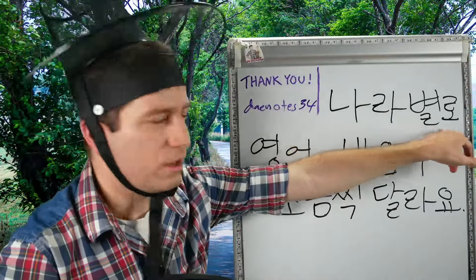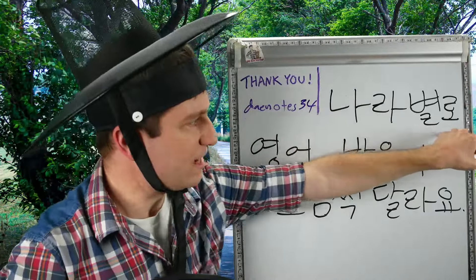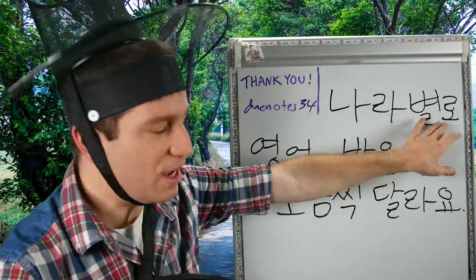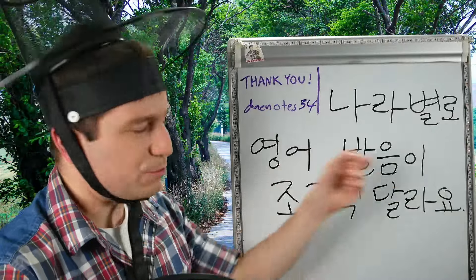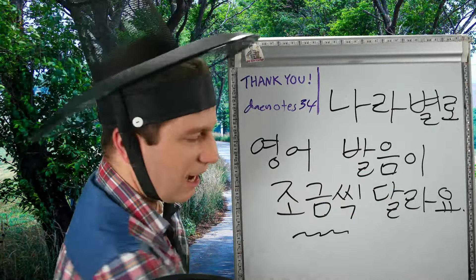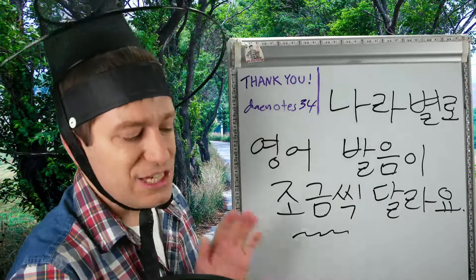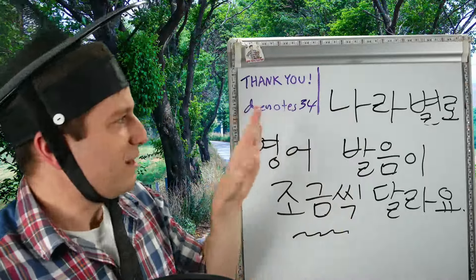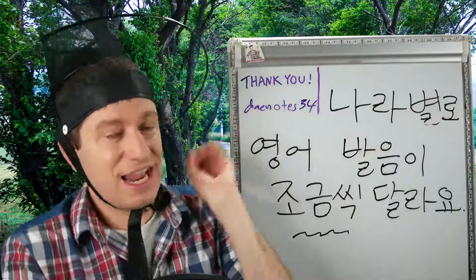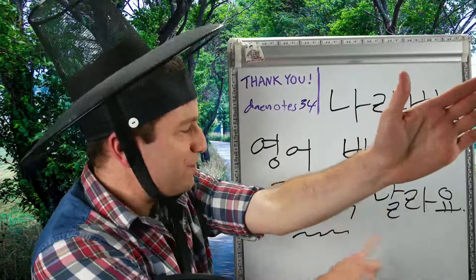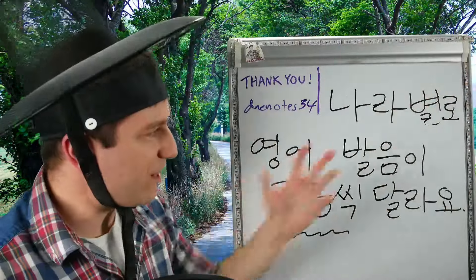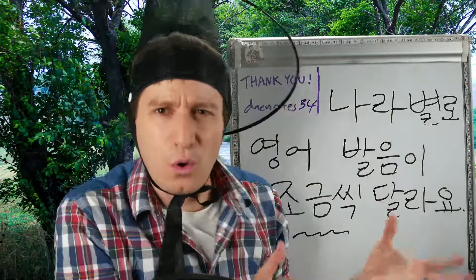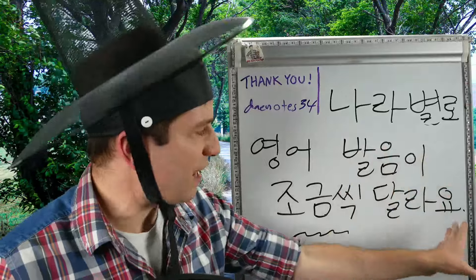나라별로 — 나라 is country. So 나라별로 means separated by country, or for each country. 영어 발음 — English pronunciation — 조금씩 달라요 — is a little bit different. So English pronunciation is a little different depending on the country, or for each country. You're saying that for this country 영어 발음이 조금씩 달라요, and this country, and this country — whatever you're saying applies to each of these individually and not just as a whole. 나라별로 영어 발음이 조금씩 달라요.